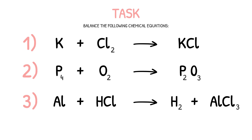In this reaction, phosphorus reacts with oxygen to form phosphorus oxide. This reaction is unbalanced, so we can start by adding a two before the phosphorus oxide in the products. There are now two molecules of phosphorus oxide, meaning there are now four atoms of phosphorus and six atoms of oxygen in the products. The number of phosphorus atoms in the reactants and products is now balanced. However, there are more oxygen atoms in the products than in the reactants. To balance this, we add the number three before the oxygen in the reactants — there are now three molecules of oxygen, and therefore six oxygen atoms in the reactants too. This equation is now balanced.